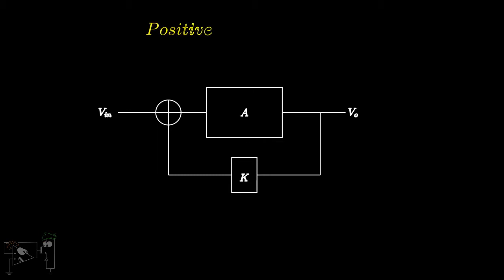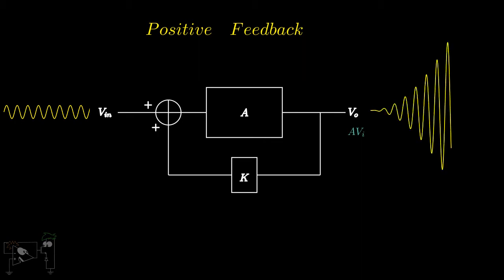Let's take a look at positive feedback first. Say we give a sinusoidal voltage VI at the input. We'll get an amplified output AVI. Now due to the positive feedback, this AVI is added to the input VI and fed back to the input of the amplifier. So we get an even larger output now. This larger output is added again to the input and fed to the amplifier, and this output keeps growing larger and larger, ideally reaching infinity.